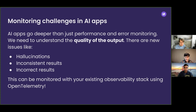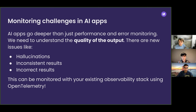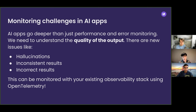With a traditional full stack web or mobile app, the inputs and outputs are very predictable. One of the challenges with AI apps is that we need to have some observability around the quality of the output of our interactions with LLMs. We need to be tracking to make sure that things protect users from incorrect behavior.